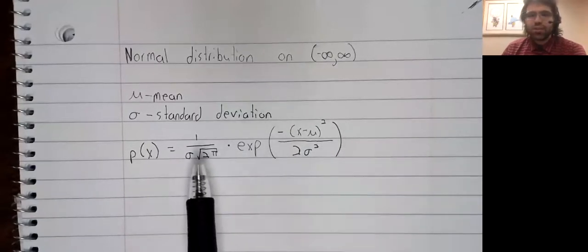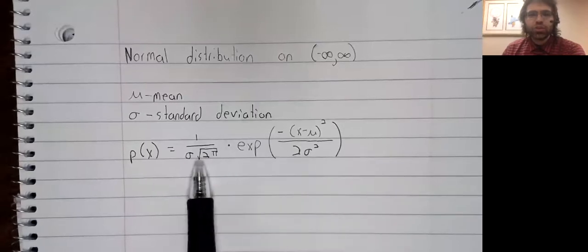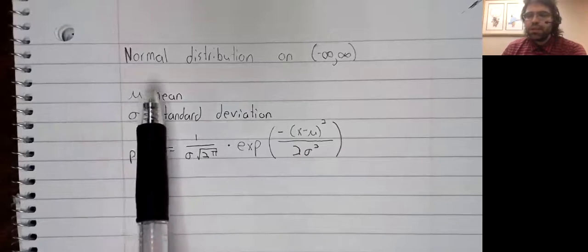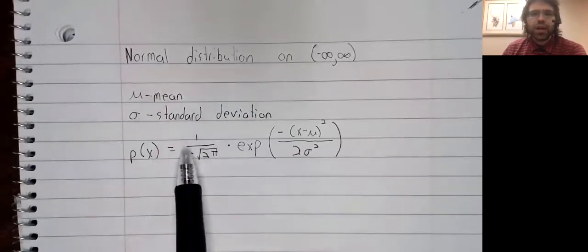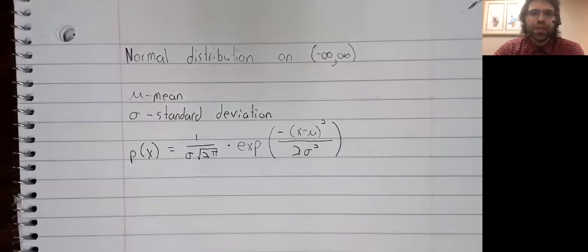It's this complicated looking exponential thing. And the mean and the standard deviation appear directly in the formula. So there's no question about trying to figure out what they are in this case.